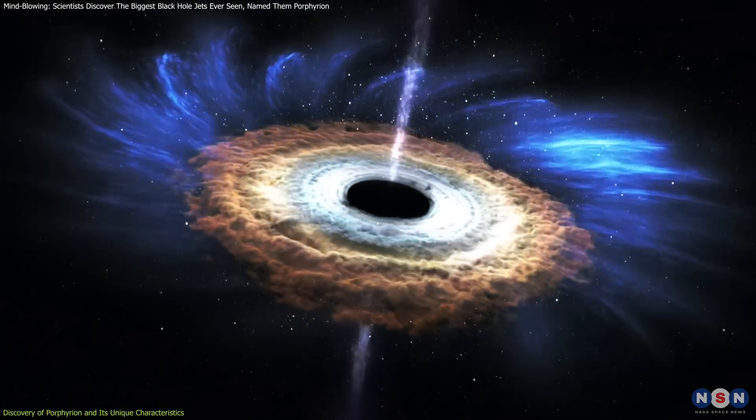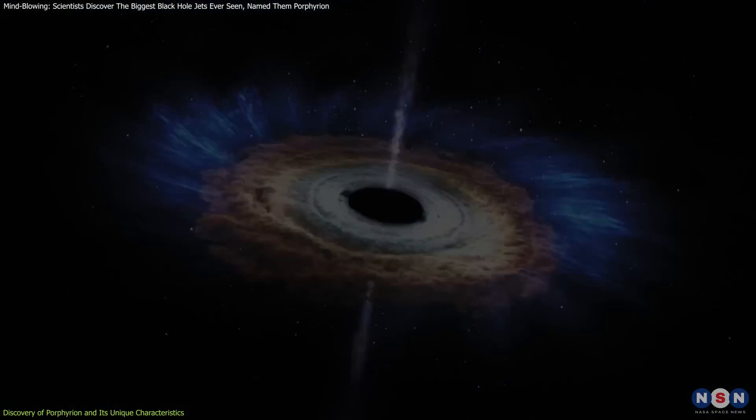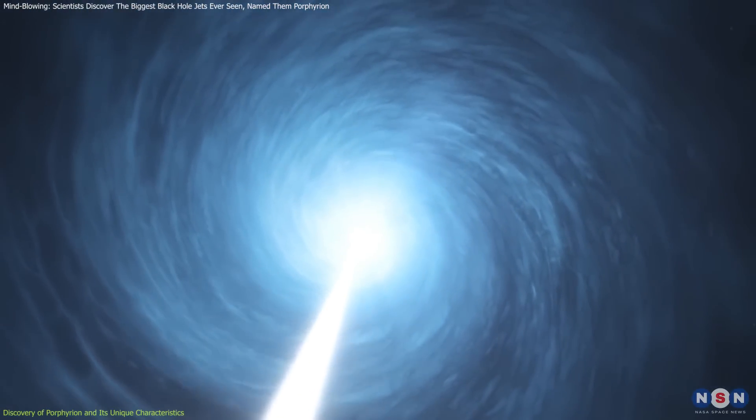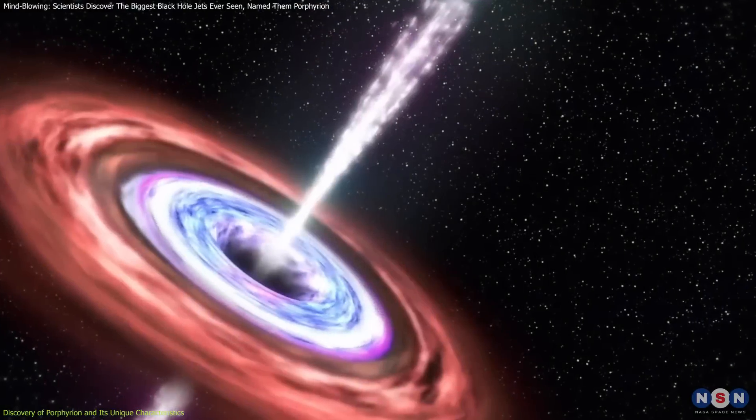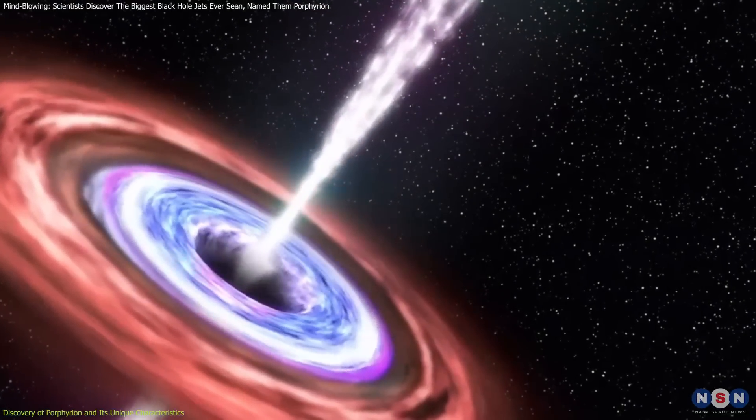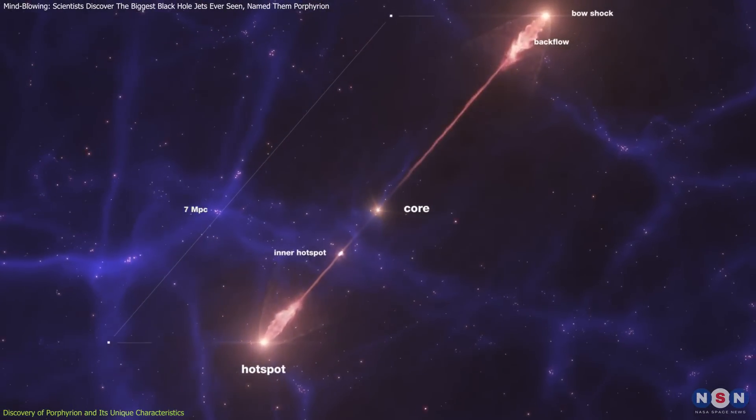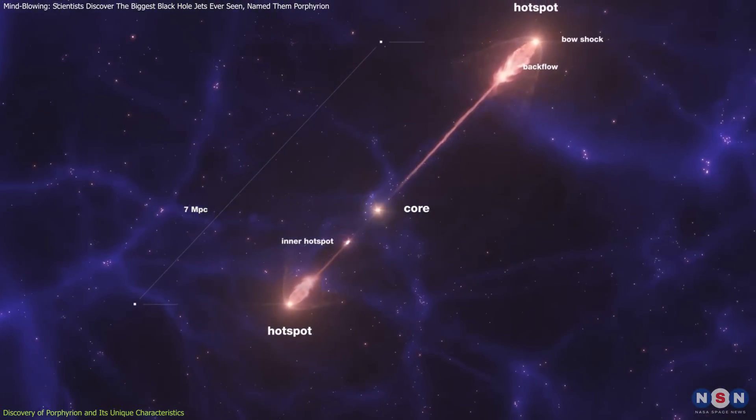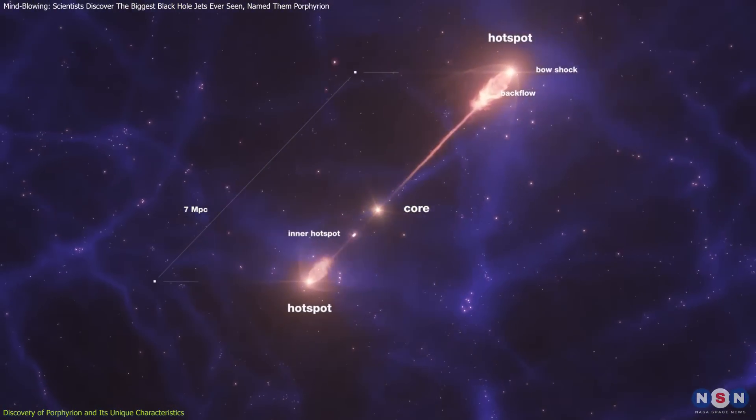These obstacles bend, twist, and distort jets over time. However, its jets have remained almost perfectly straight for about two billion years, which poses a unique puzzle for scientists, because it suggests that this jet system has somehow threaded its way through a quiet stretch of the universe, avoiding the usual disruptions.